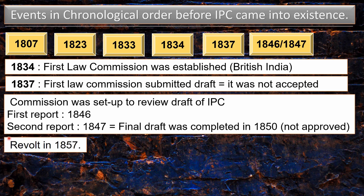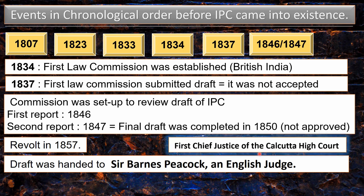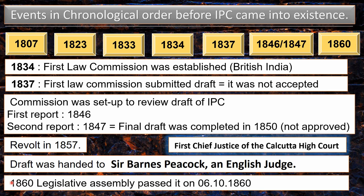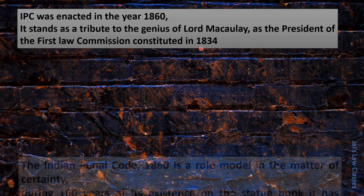A commission was set up to review the draft of the IPC; the first report was presented in 1846 and the second in 1847. The final draft was completed in 1850 but was not approved. Then came the revolt of 1857. The completed draft was handed to Sir Barnes Peacock, an English judge who became the first Chief Justice of the Calcutta High Court. After all final revisions, the Legislative Assembly passed it on 6th October 1860. The IPC was enacted in the year 1860 and stands as a tribute to the genius of Lord Macaulay, who was the president of the first Law Commission of British India constituted in 1834.